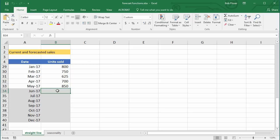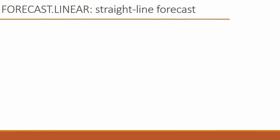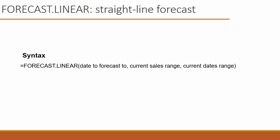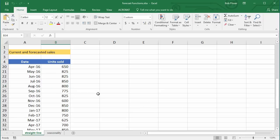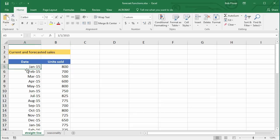Before we do a straight line forecast, let me show you the syntax of the function. That function is FORECAST.LINEAR, and the syntax is as follows: equals FORECAST.LINEAR, and in the parentheses we have three arguments. The first argument is the date that we are forecasting to. The second argument is the range of the current sales. The third argument is the current dates of those numbers that you're forecasting.